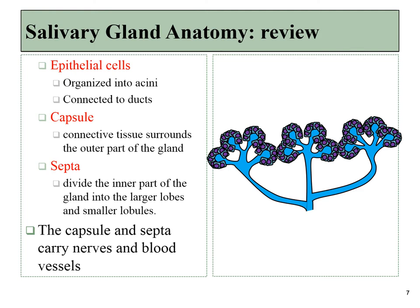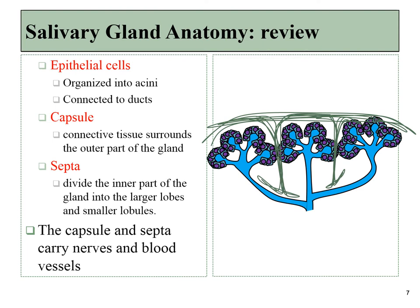Epithelial cells are pretty squishy, so to give these glands some structure, they are surrounded by connective tissue, like some dense irregular connective tissue that's mostly collagen fibers. This connective tissue may extend into the gland, dividing it into separate chambers or rooms. The little walls that separate the rooms are called septa, and are made of the same connective tissue as the outer capsule. And this is the basic histology of a salivary gland.